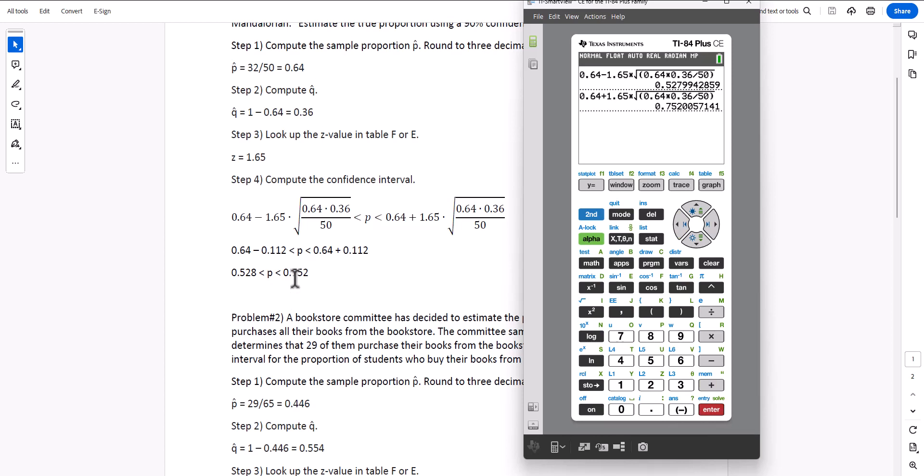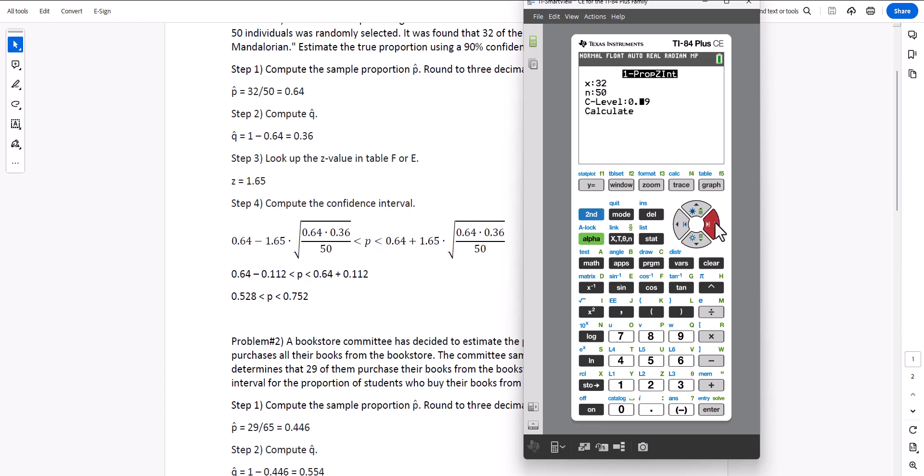Now another way of calculating the confidence interval limits without having to type in an equation is to use the built-in function. We click on stat, go to test, and we need to go down past level 9 until we get to A, one proportion z interval. We hit enter, we type x, x is 32, we type n, n is 50, and then the confidence level is 90%, so we have to modify 0.99 to 0.90, and then we hit calculate.